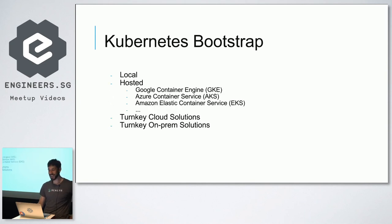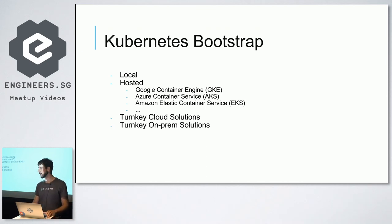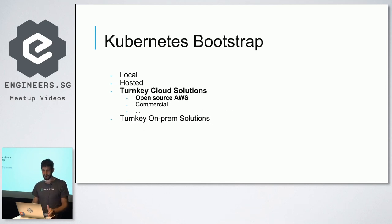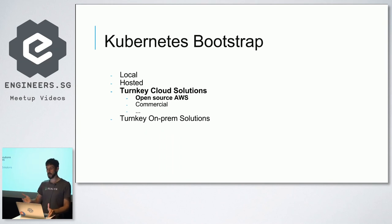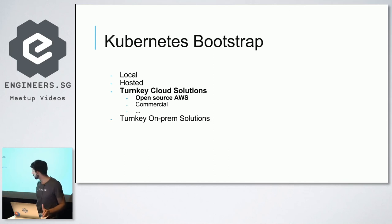Then there's hosted: Google Container Engine, Azure, and Amazon announced EKS, which is not generally available yet. Those are the options — I'm not going to endorse anything. Then there are turnkey cloud solutions — a lot of projects allow you to run Kubernetes very quickly on one of these clouds, and one of them is AWS, which is basically the focus of this talk.